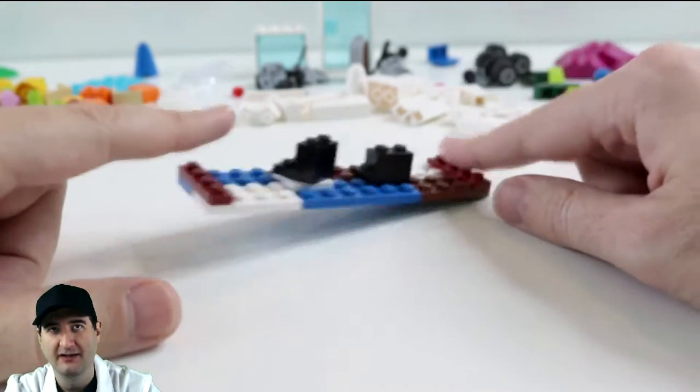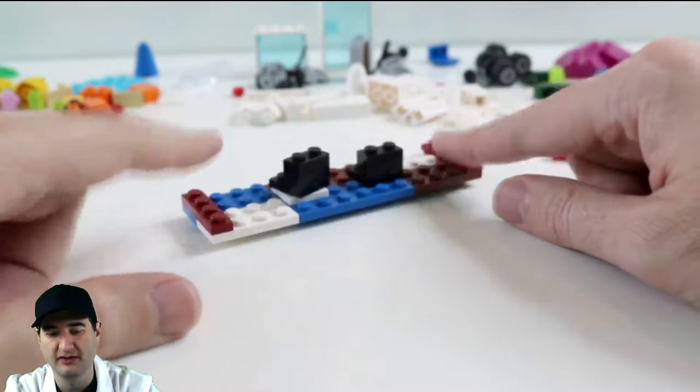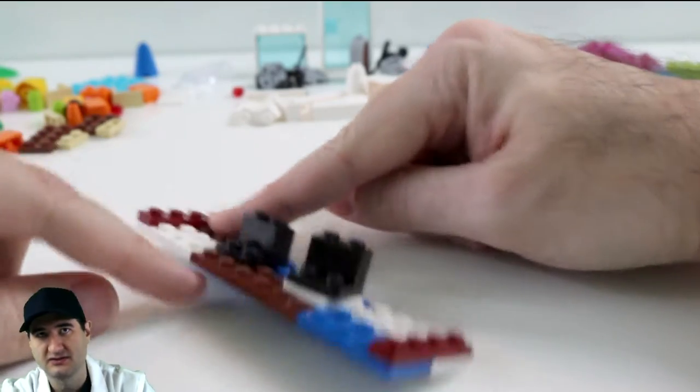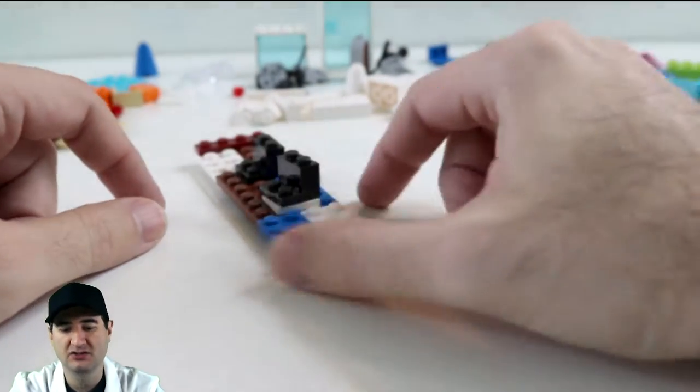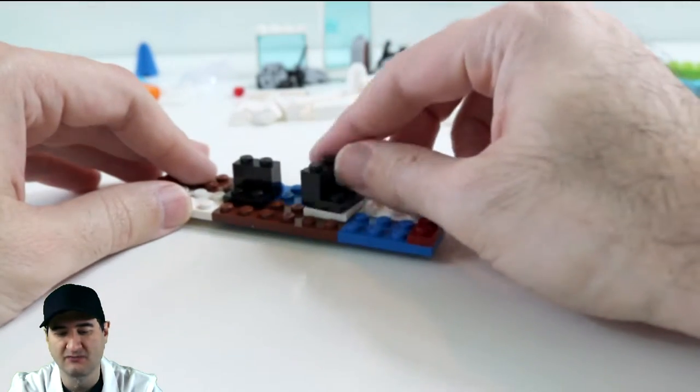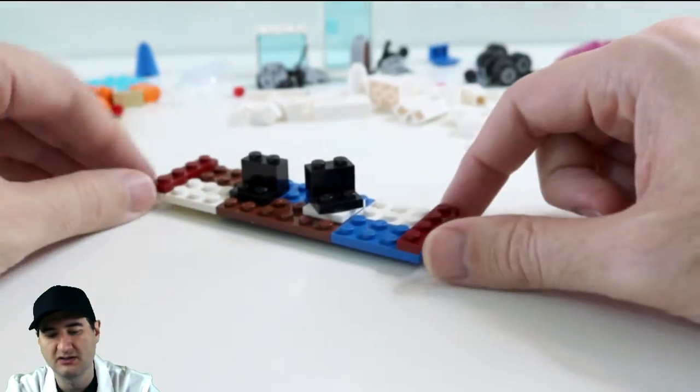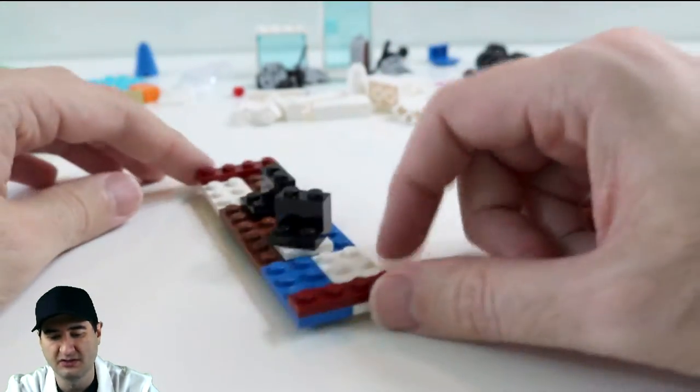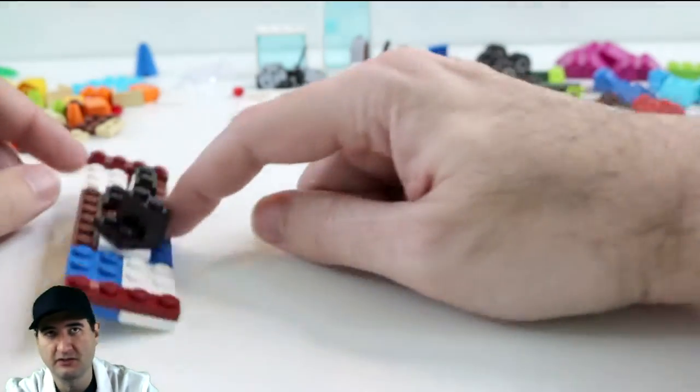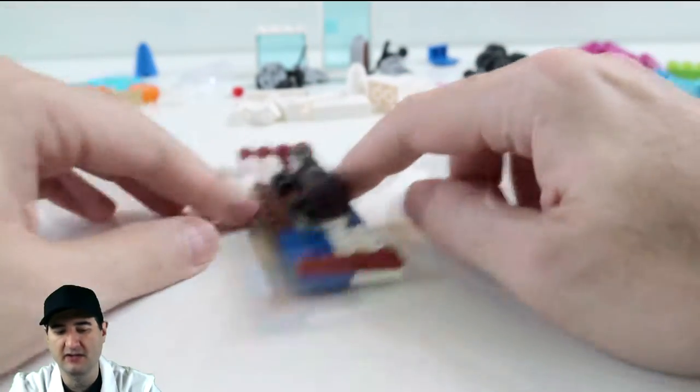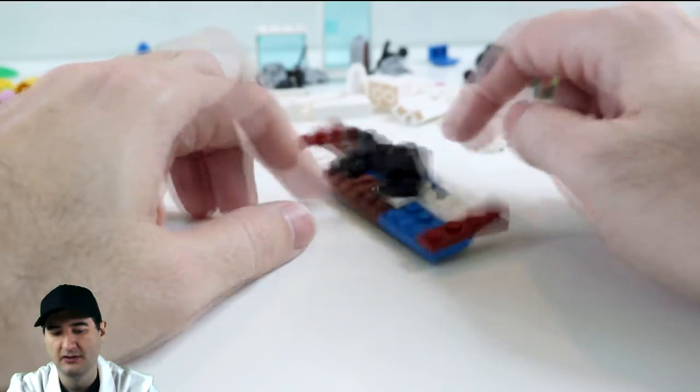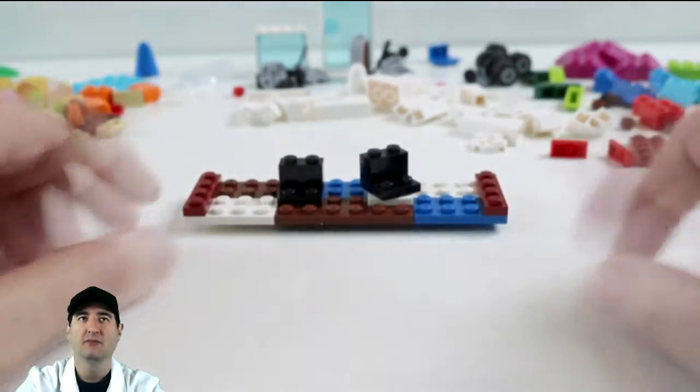So we got here a finger snowboard that you can use to slope down or go down the slopes. Check out the bindings - the bindings rotate a little bit so that you can get your foot into the right position and you can snowboard down the mountain on this Lego snowboard.